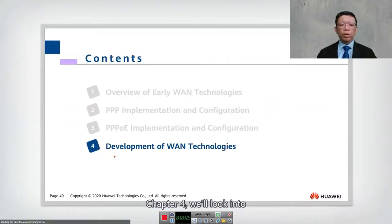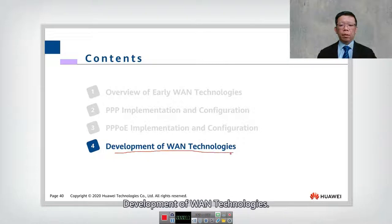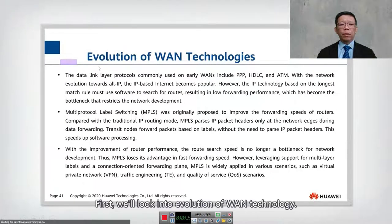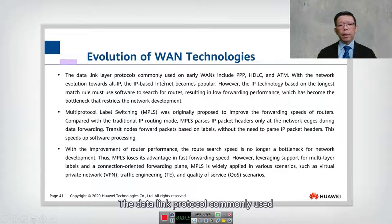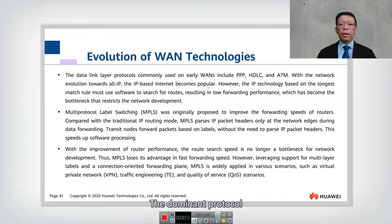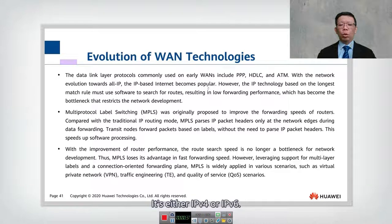Chapter number four — we look into the development of WAN technology. First, we look into the evolution of WAN technology. The data link protocols commonly used on early WANs include PPP, HDLC, and ATM. With network evolution toward IP, the IP-based internet became popular. The dominant protocol used nowadays is TCP/IP — either IPv4 or IPv6.